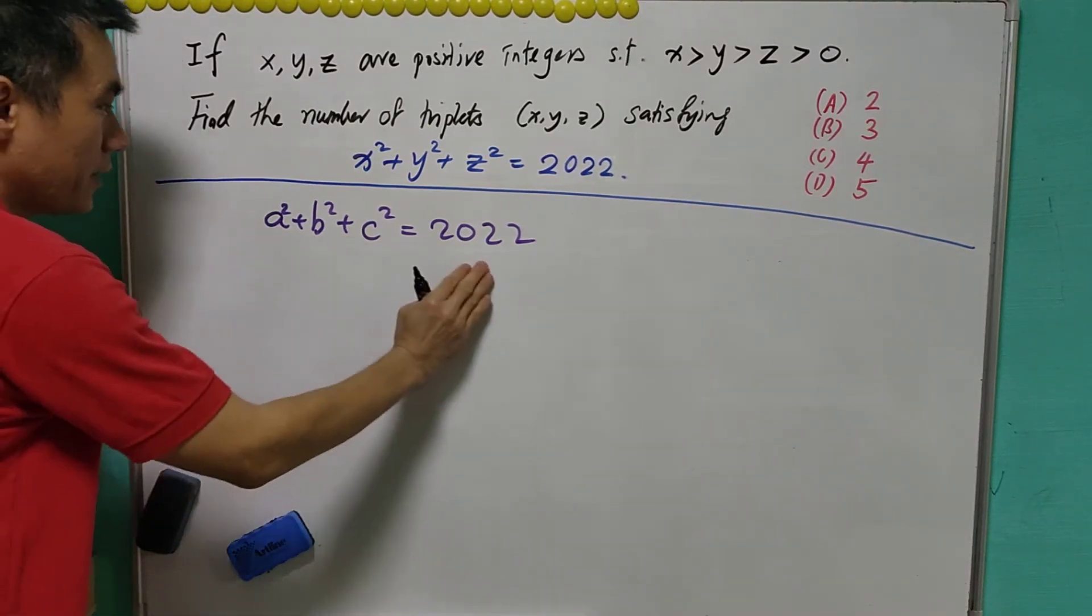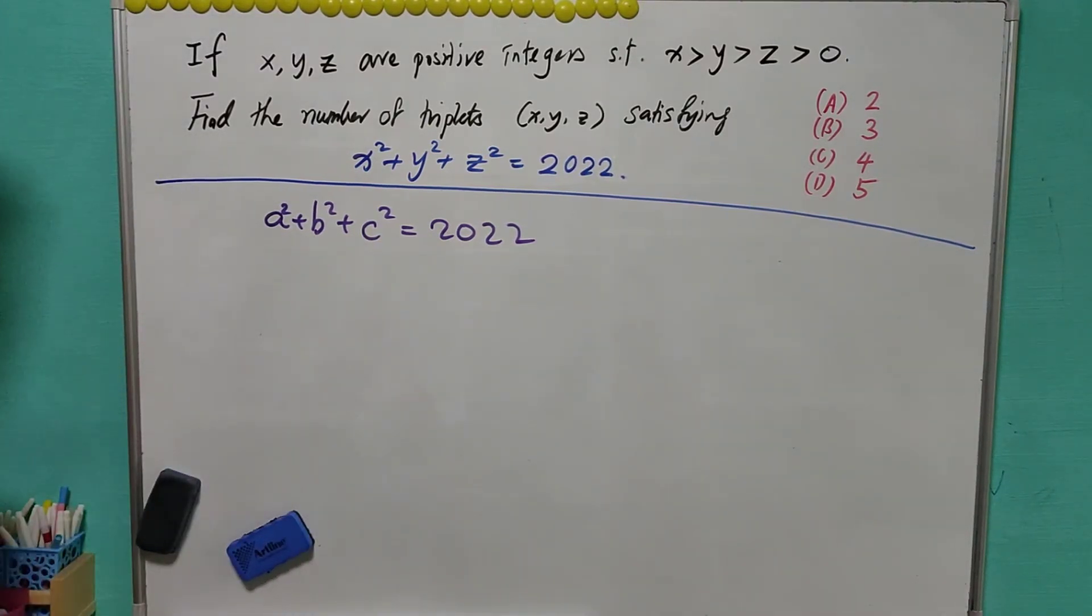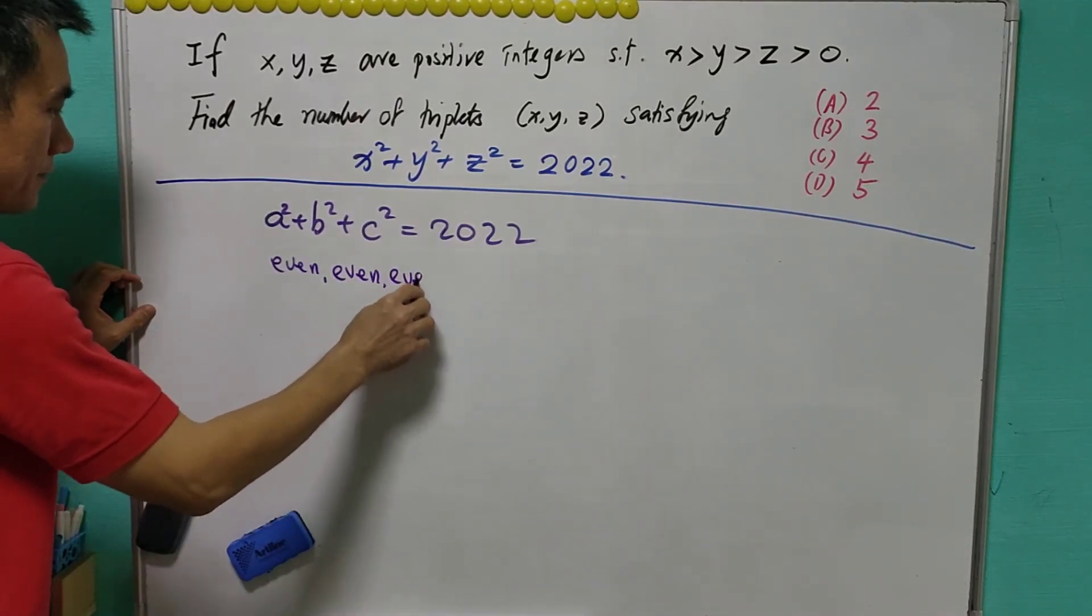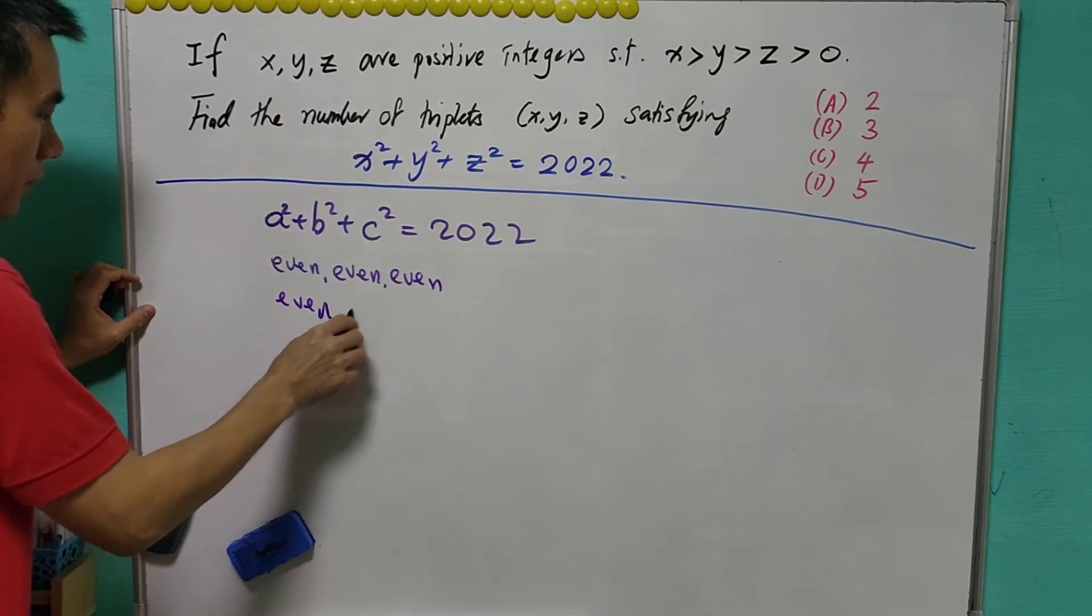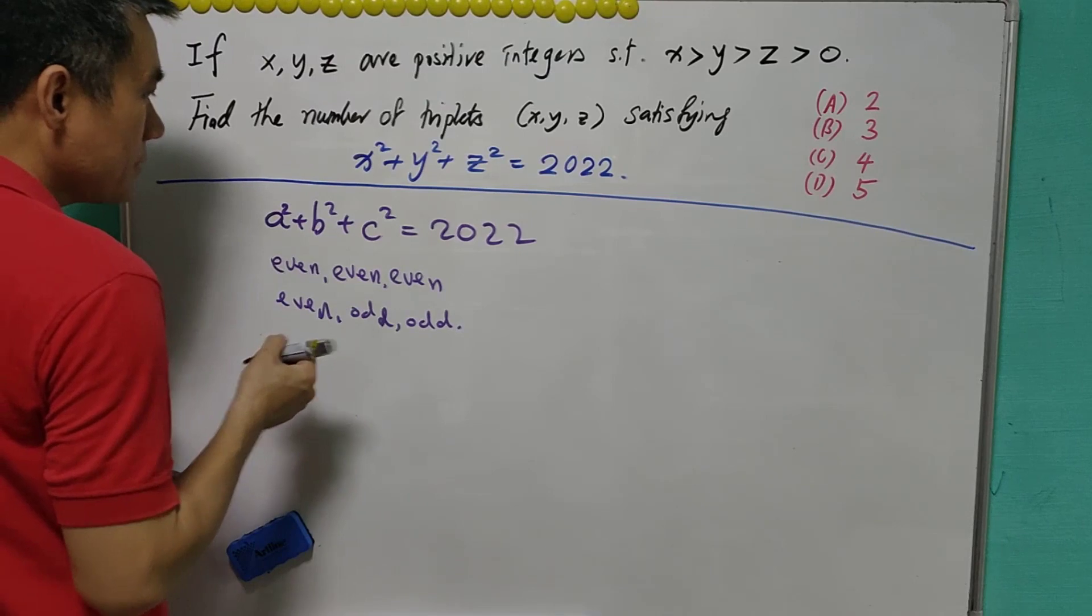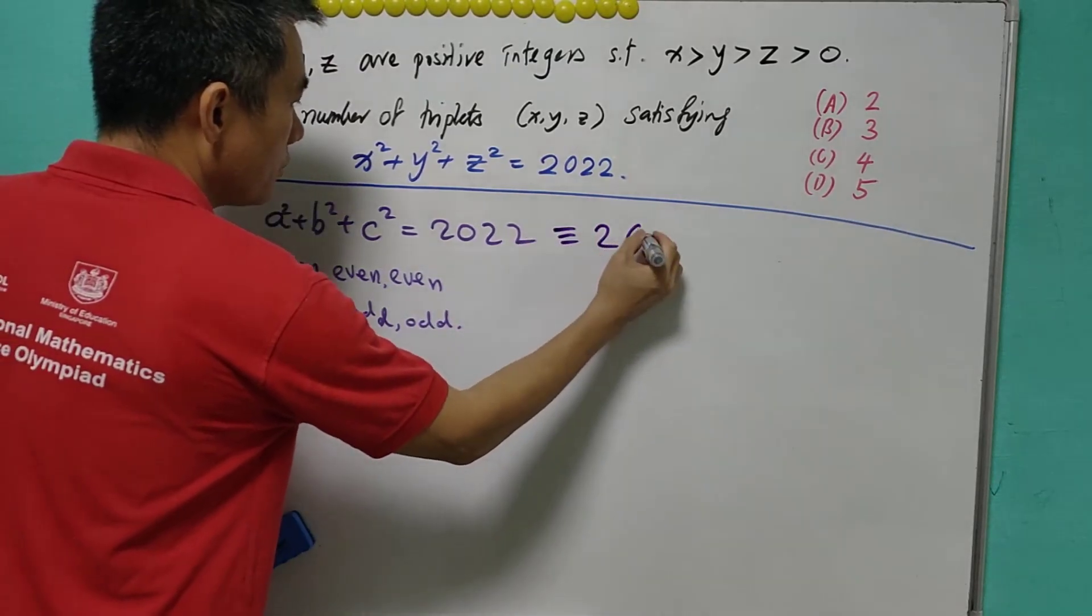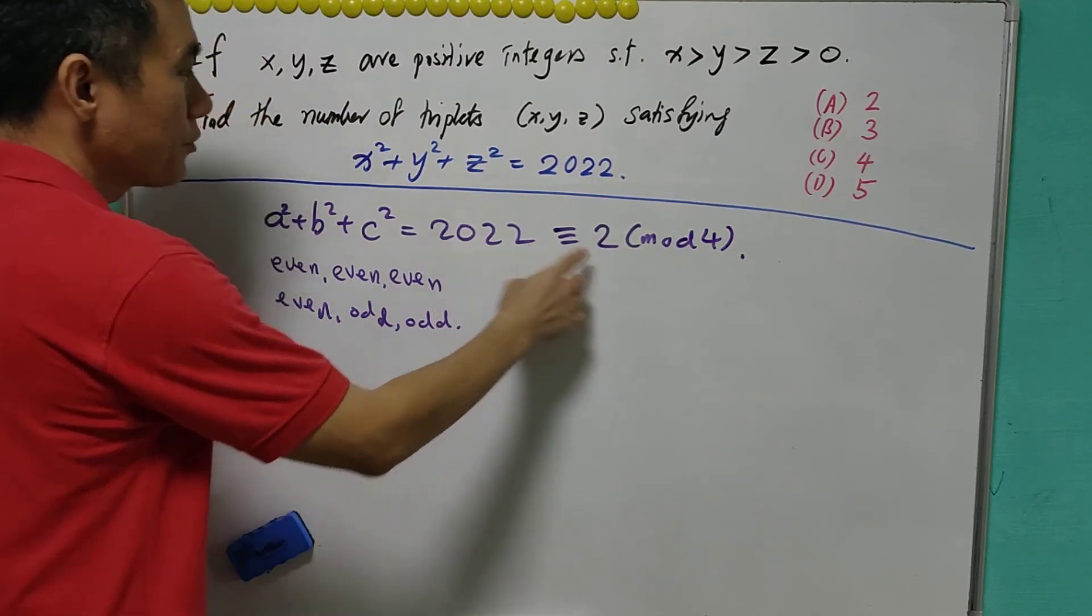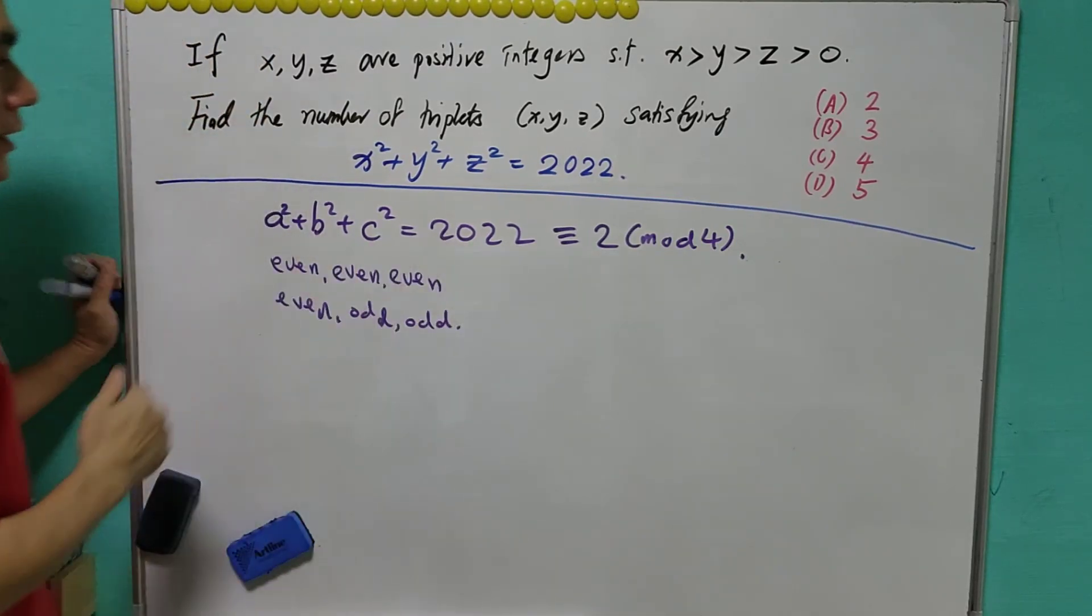The sum of three integers being an even number, there are only two cases: even, even, and even, or even, odd, odd. Now, it's clear that 2022 is congruent to 2 mod 4, meaning that it will give a remainder of 2 when 2022 divided by 4.